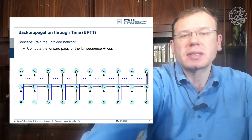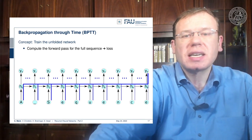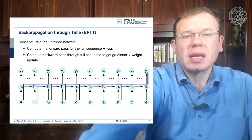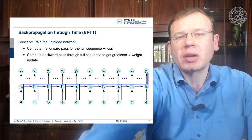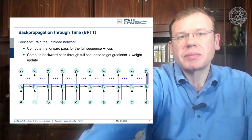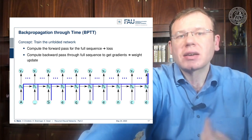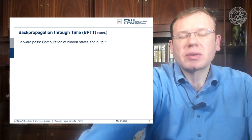We apply the loss and backpropagate over the entire sequence, so that even things that happen in the very last state can have influence on the very beginning. We compute the backward pass through the full sequence to get the gradients and then the weight update. For one update with backpropagation through time, we unroll the complete network generated by the input sequence, compare the created output with the desired output, and compute the update.